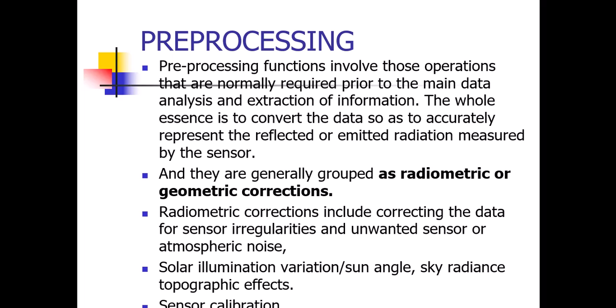This radiometric correction is needed as a pre-processing function. It involves those operations that are normally required prior to the main data analysis and extraction of information. The purpose is to convert the data so as to accurately represent the reflected or emitted radiation measured by the sensor, so that the actual energy either reflected or emitted by the target would be represented accurately.